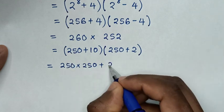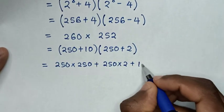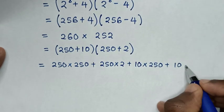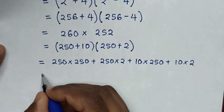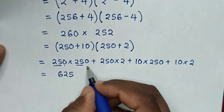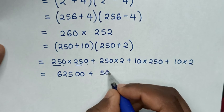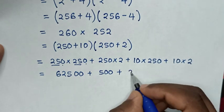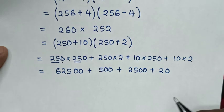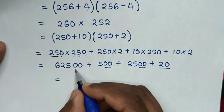Breaking down 260 times 252: 250 times 2, then plus 10 times 250, then plus 10 times 2. It will be equal to 25 times 25 is 625 with two zeros, plus 250 times 2 is 500, then plus 10 times 250 is 2500, then plus 10 times 2 is 20.